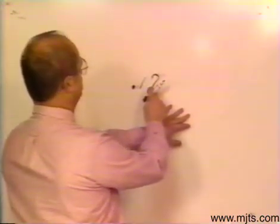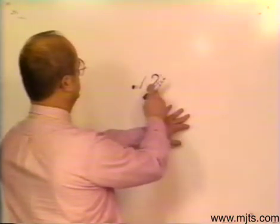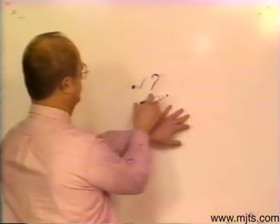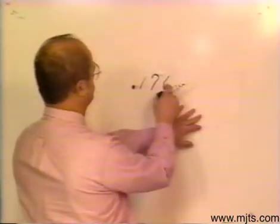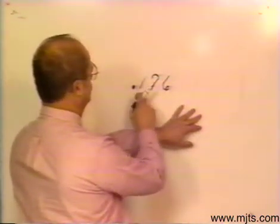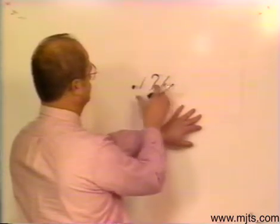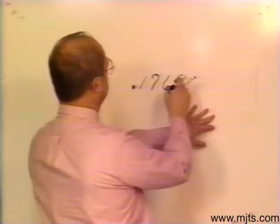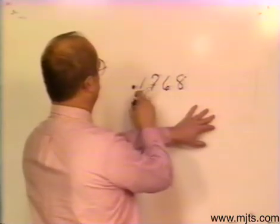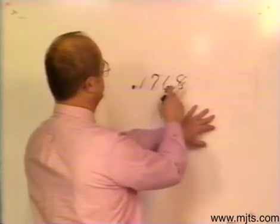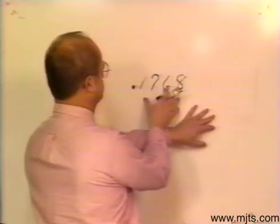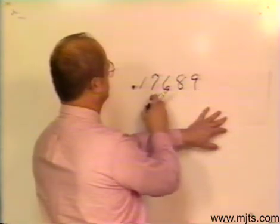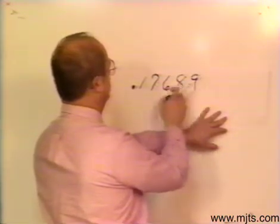The next positions continue with this pattern through the hundreds, thousands, ten-thousands, and hundred-thousands places, giving us the complete number 176,891.